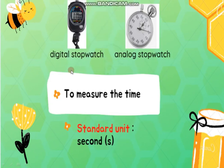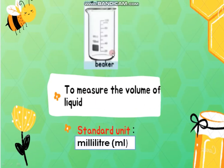Stopwatch is used to measure time. The standard unit is seconds. Beaker is used to measure the volume of liquid. The standard unit is milliliter (ml).